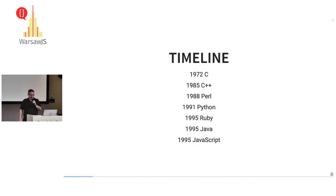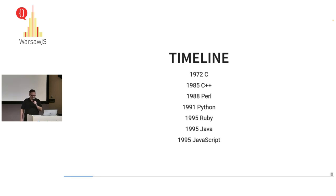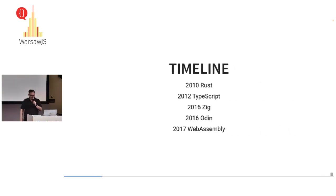In the 70s, 80s, and 90s we had quite a few programming languages designed that are still in use today. Languages like C, C++, Perl — those are many decades old. Even Java and JavaScript are from 1995.